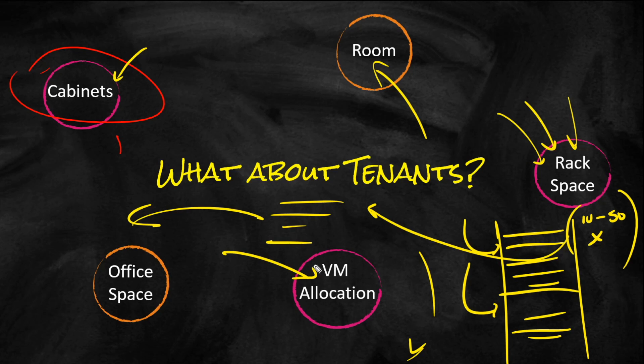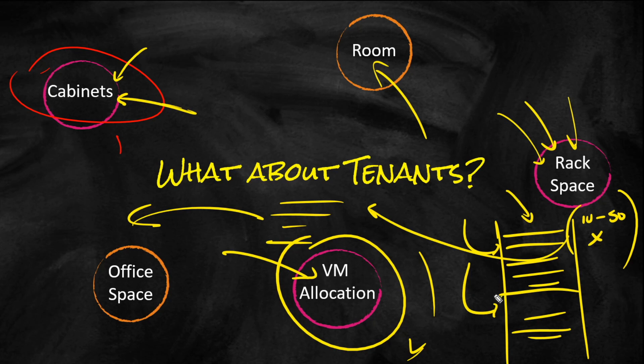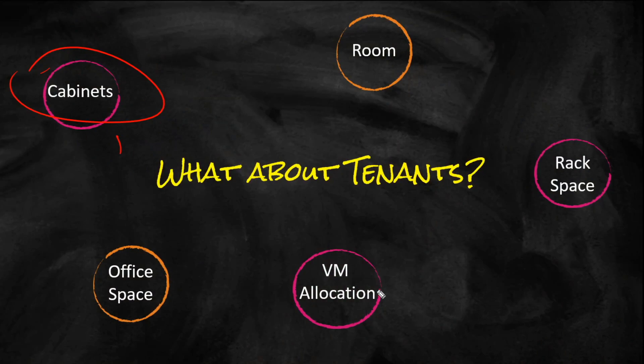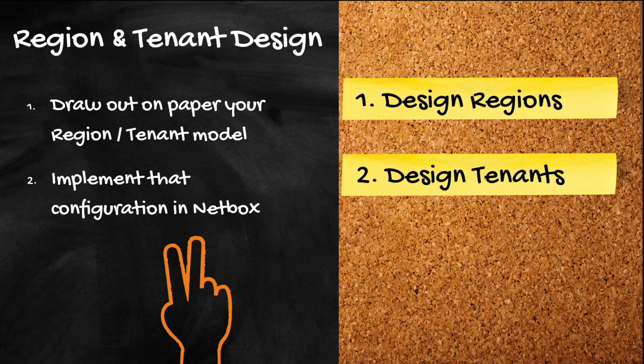You can use tenants to divide up rooms and buildings, or even a server — assigning VMs to a specific tenant, like AWS or Azure hosting models where that VM costs X amount a month. Or you can use it simply to divide up office space. So I want you to draw out a region and tenant model for your organization, and implement it in Netbox. Go in and add a few things based on a design you draw out on paper — that's when it really starts to stick. Draw it out, build it in Netbox, and now it sticks. It's that simple.